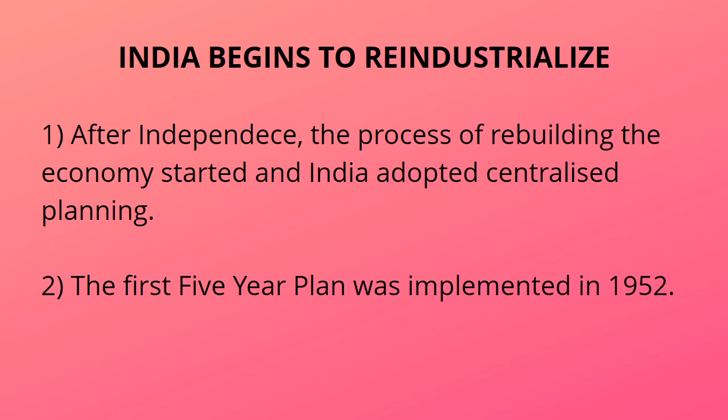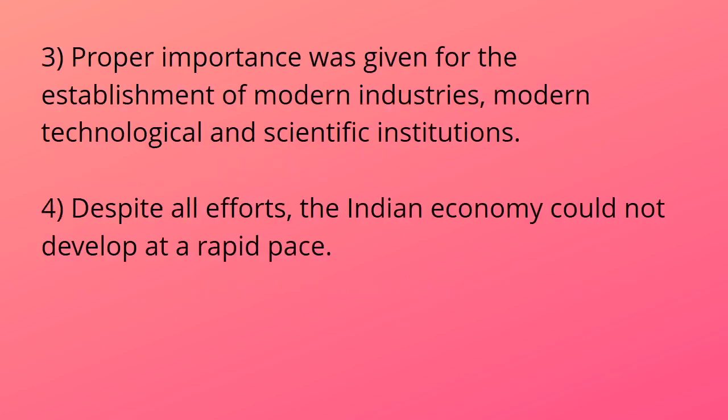The first five-year plan was implemented in 1952. These are the factors that explain how India had begun to become an industrial country. Proper importance was given for the establishment of modern industries, modern technological and scientific institutions, because without scientific institutions no innovation could take place.